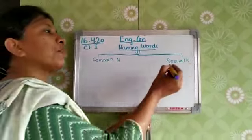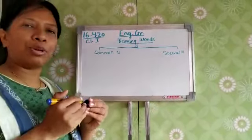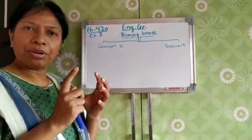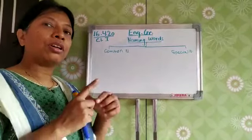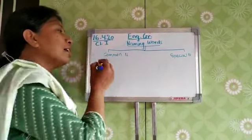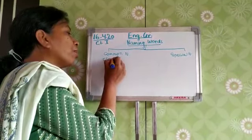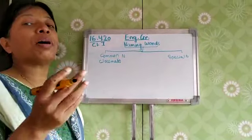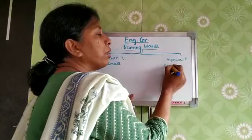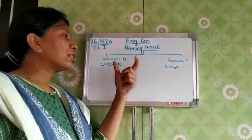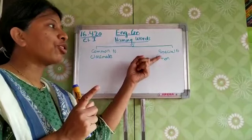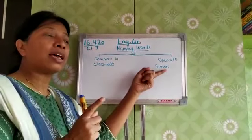By the word special name, you must have understood. If I tell you, name any of your classmates — the word classmate is a noun. Is it a special noun or a common noun? Classmate can be any child from your class, so that is a common noun. But if you give the name of a person — Simon — that special name of the child, Simon, comes under the special name column.